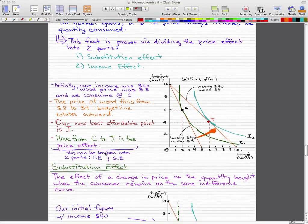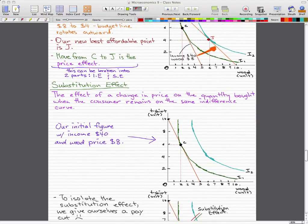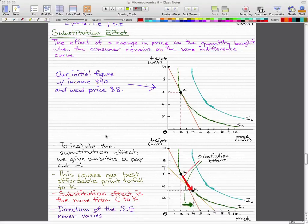We'll go through the substitution effect first. The substitution effect is the effect of a change in price on the quantity bought when the customer remains on the same indifference curve. So here is our initial figure with our income being $40 and our wood price being $8. Now to isolate the substitution effect, we will give ourselves a pay cut. This causes our best affordable point to fall to point K. So that's pretty much the substitution effect.